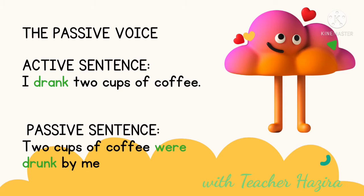The person who causes or carries out the action is called an agent and is preceded by the preposition 'by.' We usually omit the agent in some situations — for example, when the action interests us more than the agent, when we do not know who the agent is, or when it is easy to figure out who the agent is. For example: 'The bank was robbed' — you know the bank was robbed but you are not sure who did it.